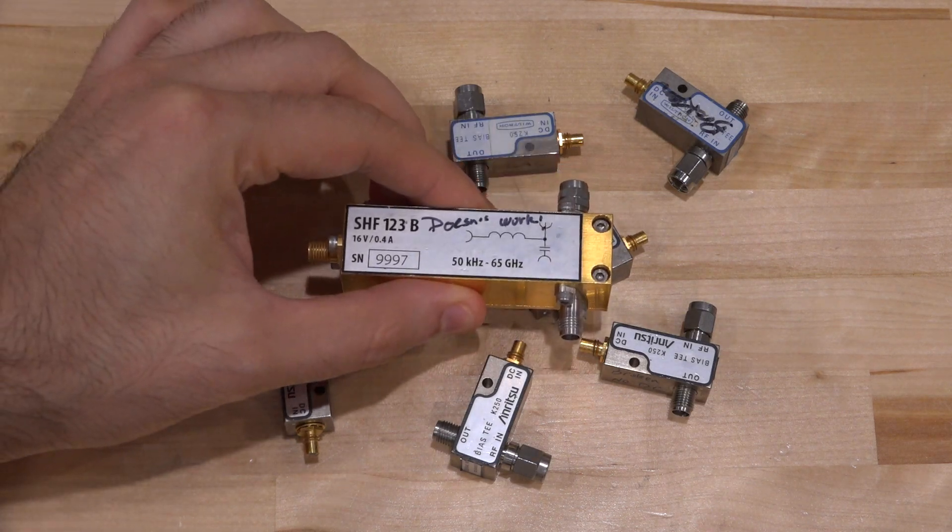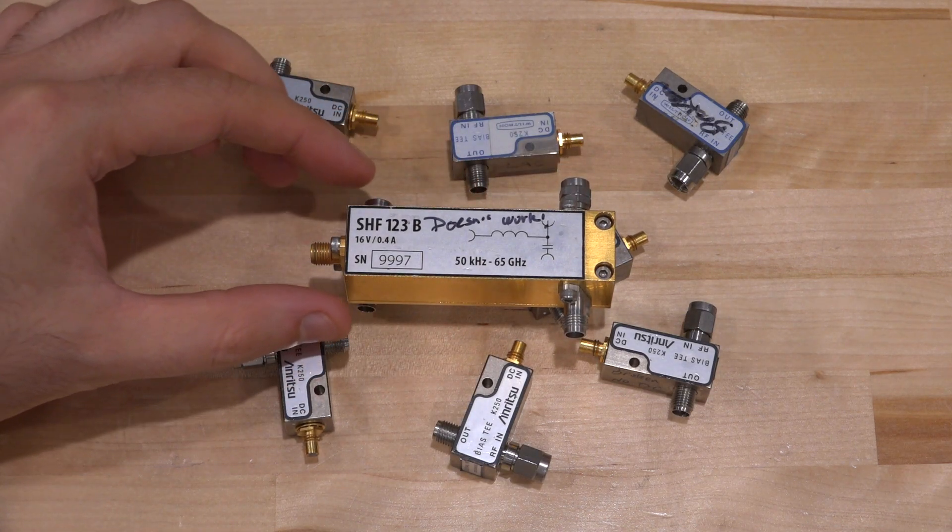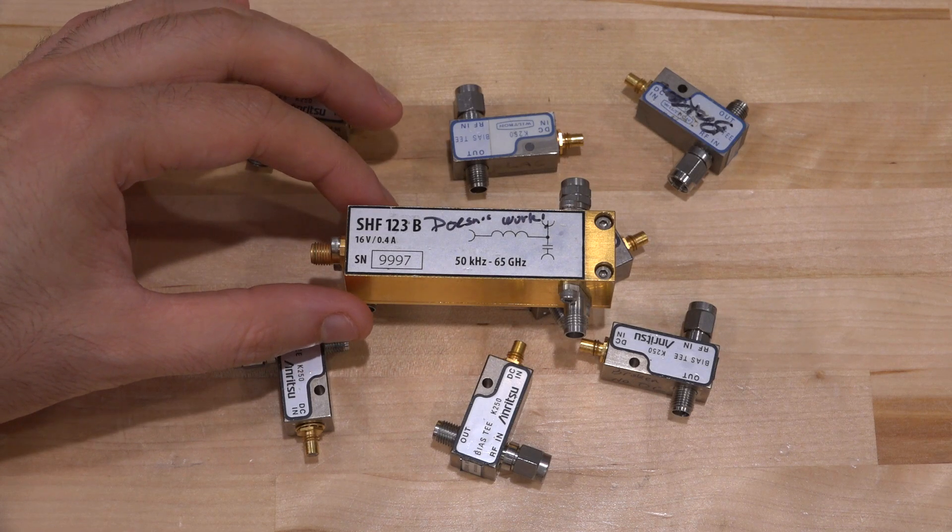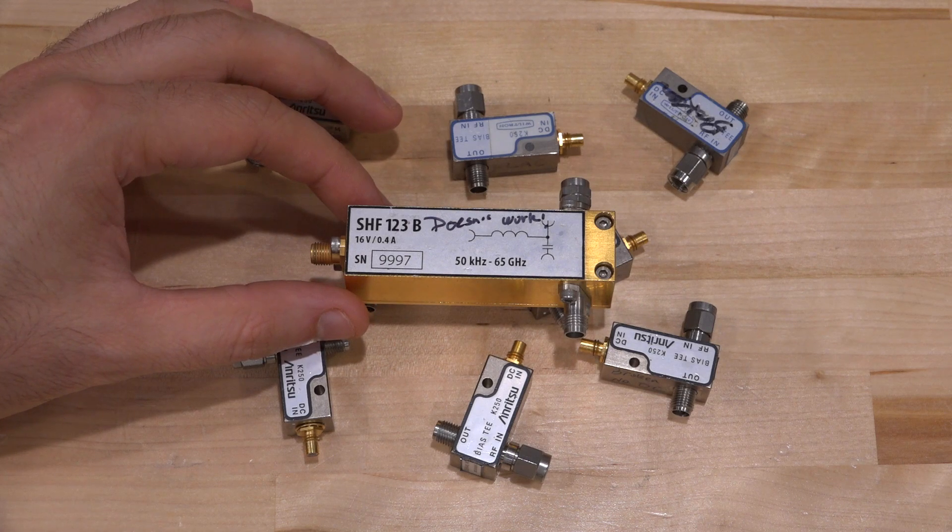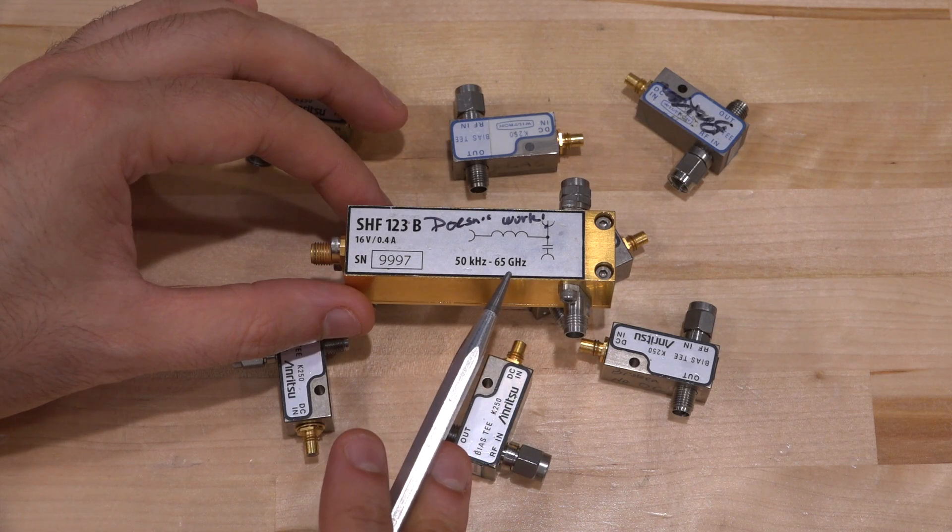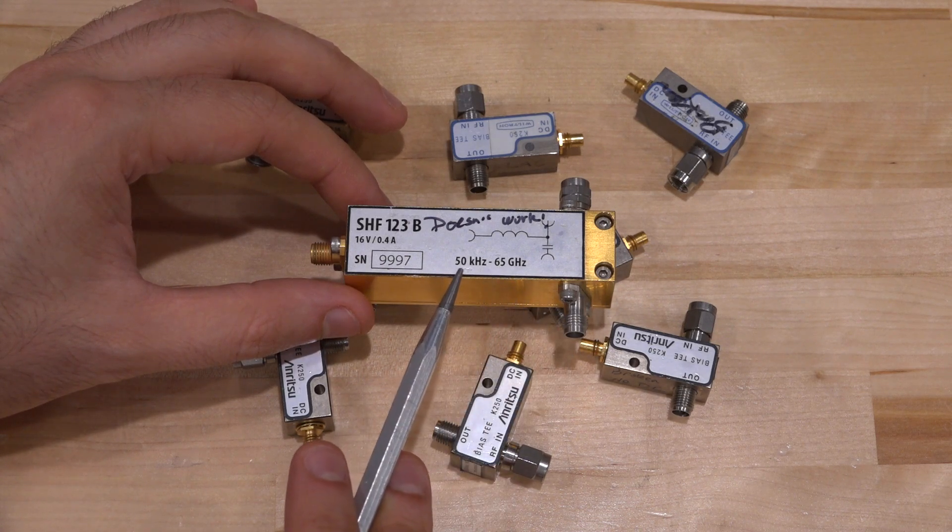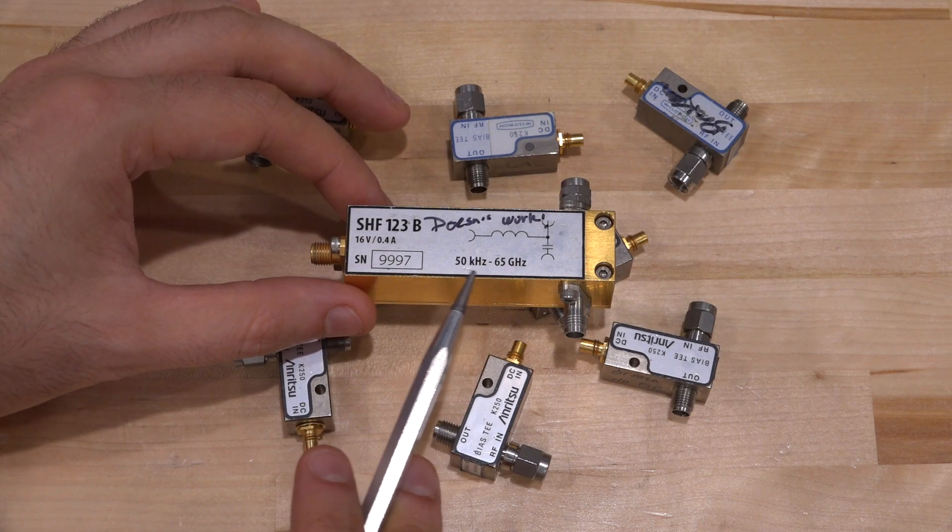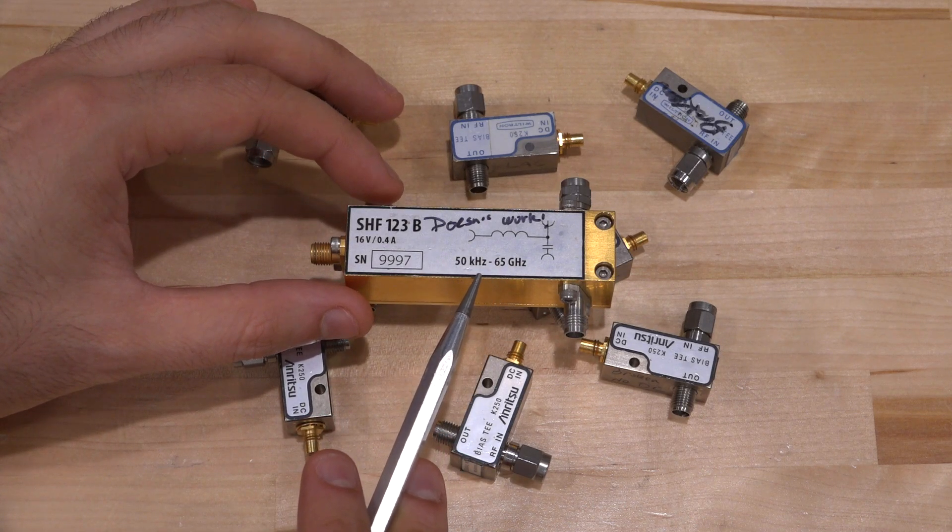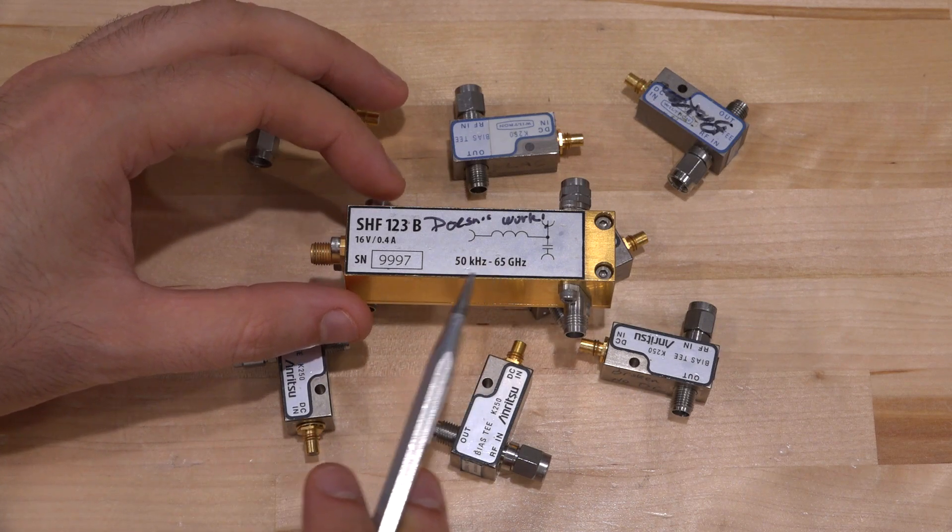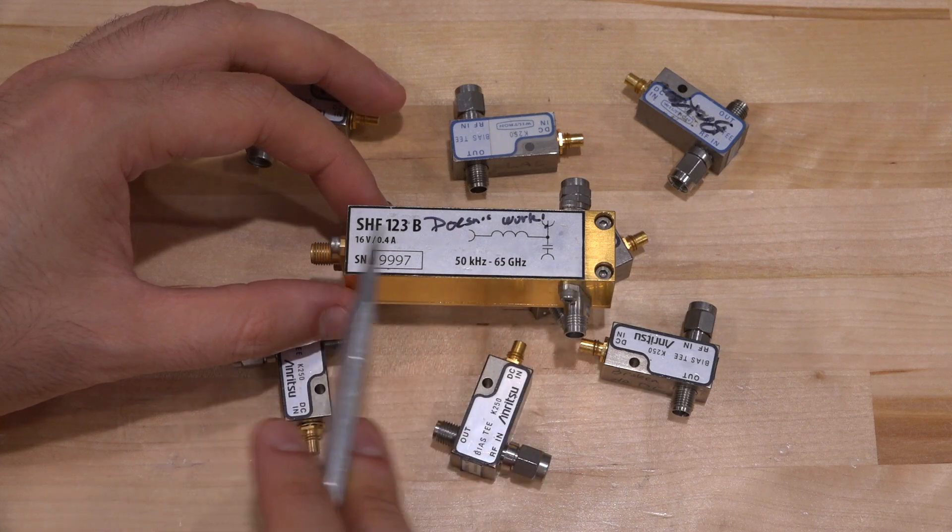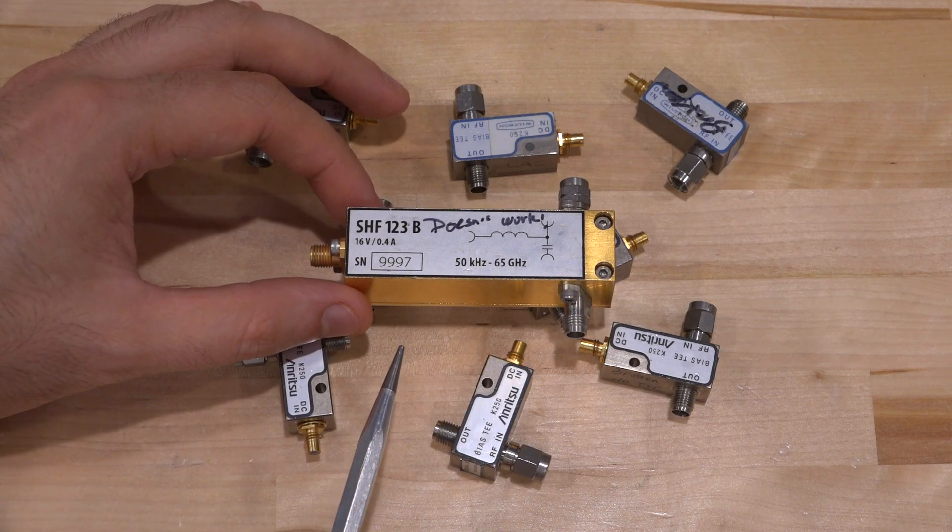I also have one over here, which is one of the ones I've had for a long time. This is an SHF123B. These are fantastic bias tees, some of the best in the industry, and they're also extremely expensive. And you can see that this one is rated to 65 gigahertz. It has a V connector on both sides, but it also goes down to 50 kilohertz, which is a huge advantage when you want to use them for broadband applications. You don't have this kind of low frequency cutoff, this high-pass response from them. And you can see how much larger it is because of how it needs to be built.